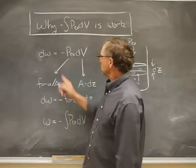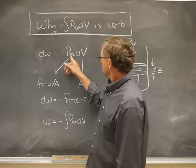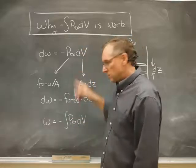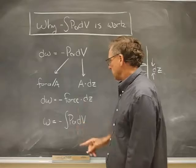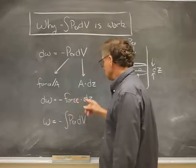So I can write this same expression: the little bit of work being done is equal to the external pressure (force divided by area) times the change in volume (area times dz). Obviously the areas cancel out, so we have that dw equals negative force times distance.